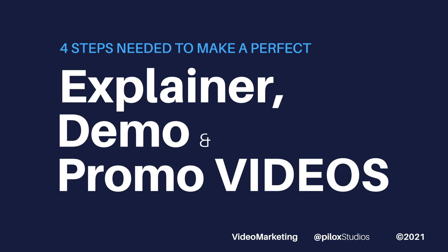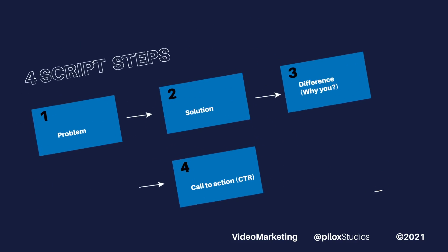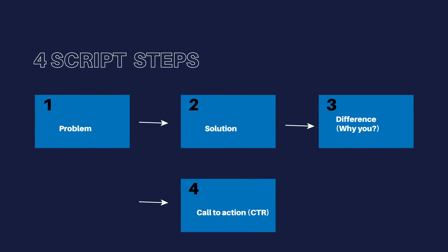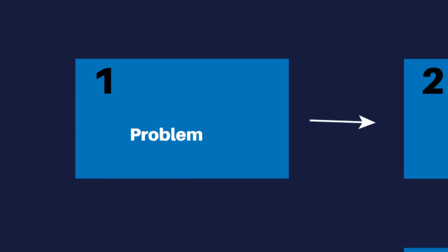These are the four steps needed to make a perfect commercial. As you can see on the screen, number one is the problem, number two is the solution, number three is the difference, and number four is the call to action. This may sound weird or new to you, but I'm going to try to break this down so that you can master it clearly.